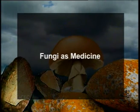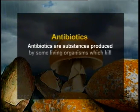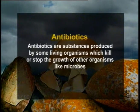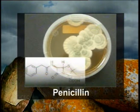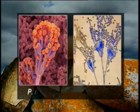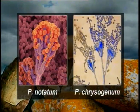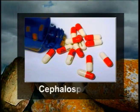Another important aspect of fungi is their use as medicine. Several fungi play an important role in the production of drugs, particularly antibiotics. Antibiotics are substances produced by some living organisms to kill or stop the growth of other microbes. The wonder drug penicillin, discovered by Alexander Fleming in 1928, is produced from the fungi Penicillium notatum and Penicillium chrysogenum. Several other antibiotics have been extracted from fungi, like cyclosporins, cephalosporins, and campestrin.